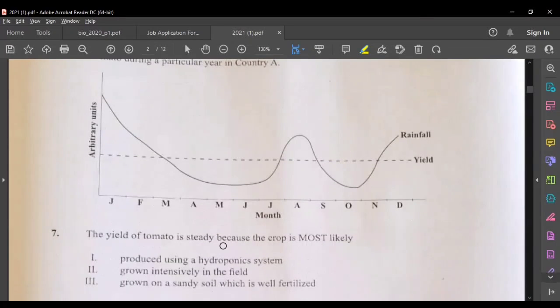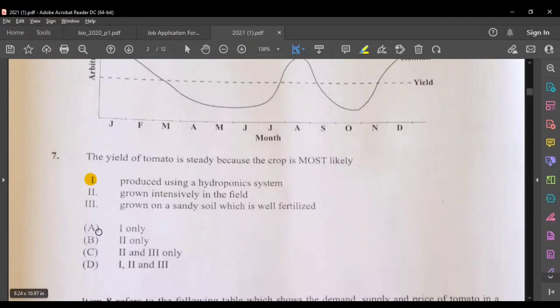The question is the yield of tomato is steady because the crop is most likely produced using a hydroponic system, grown intensively in the field, or grown on a sandy soil which is well fertilized. If they are grown intensively in the field, rainfall will affect their yield. If they're grown on sandy soil, especially in dry season they will have problems there. So the most suitable answer here in my opinion would be A.